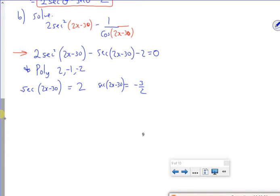I've just put it into poly and I've got some numbers. So secant is 1 over cos, so if I flip it, cos(2x-30) is 2 over 1, so that becomes a half. And then cos(2x-30) is minus 2 thirds.